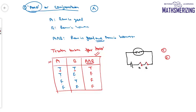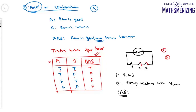Consider statement P: '2 is less than 3,' and statement Q: 'Every rectangle is a square.' The truth value of P∧Q means '2 is less than 3 AND every rectangle is a square.' We know 2 < 3 is true, but every rectangle is not a square, so Q is false. When A is true and B is false, the truth value of P∧Q is simply false.